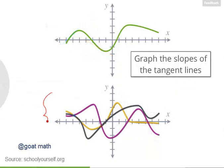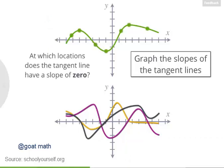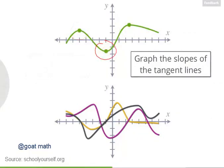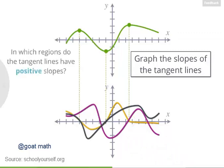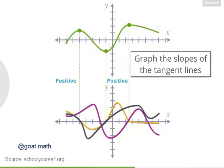Let's figure out which of these curves down here is a graph of the slopes of the tangent lines for this graph up here. First, at which locations in this top graph does the tangent line have a slope of zero? Precisely, at these three locations, which are all local maxima or minima, the tangent lines have a slope of zero. So that means on the graph down here, for these same x coordinates, the y coordinates should be zero. Next, in which regions do the tangent lines have positive slopes? Exactly, in these two regions, where the function is increasing, the tangent lines have positive slopes.